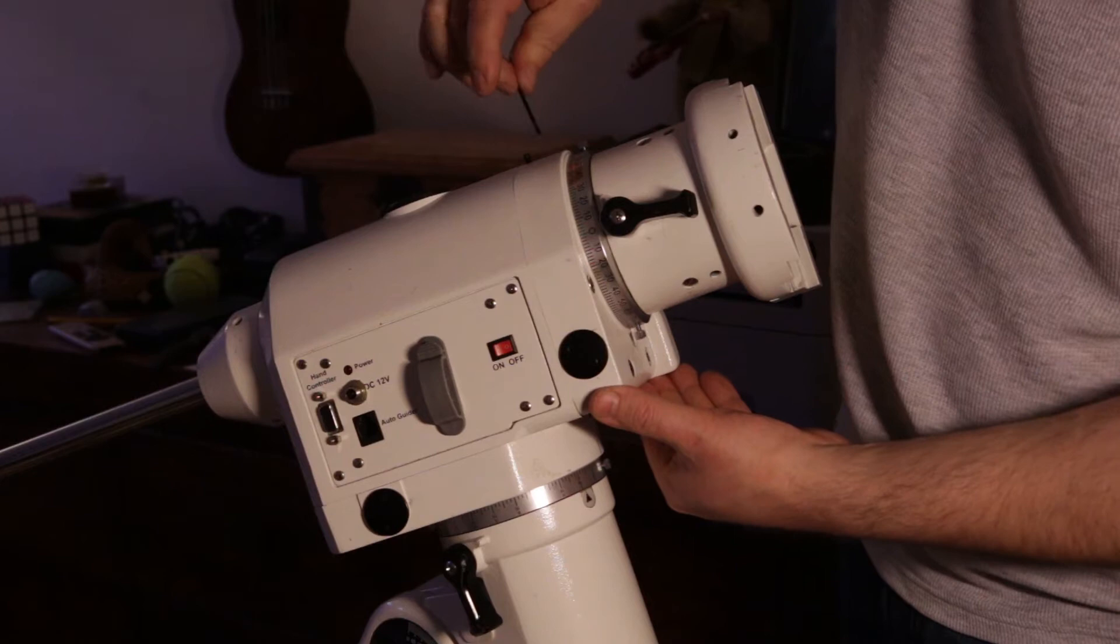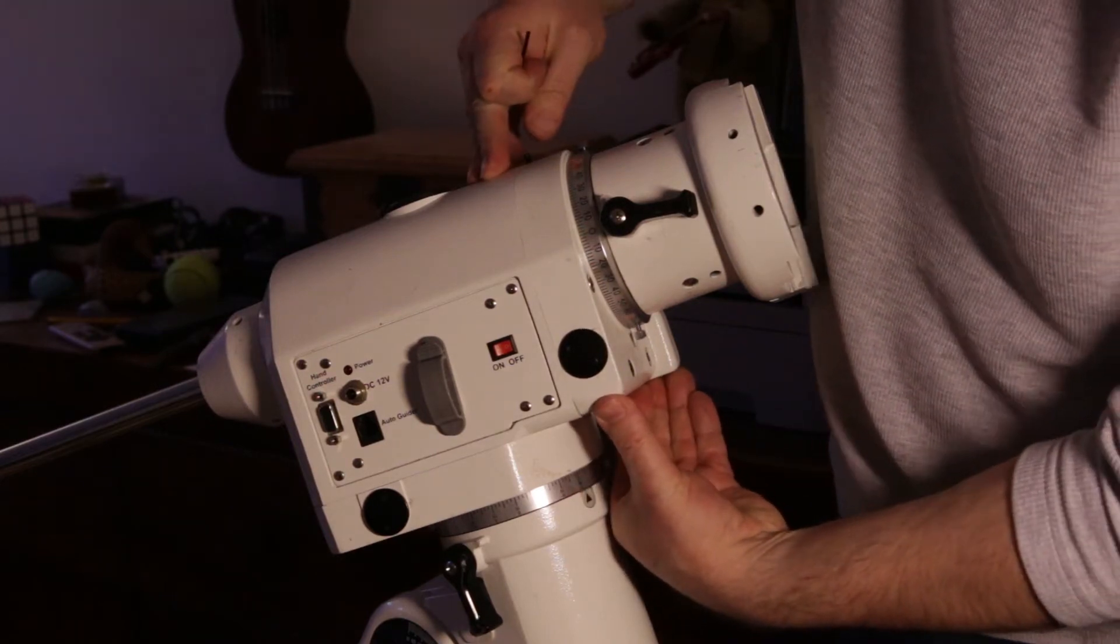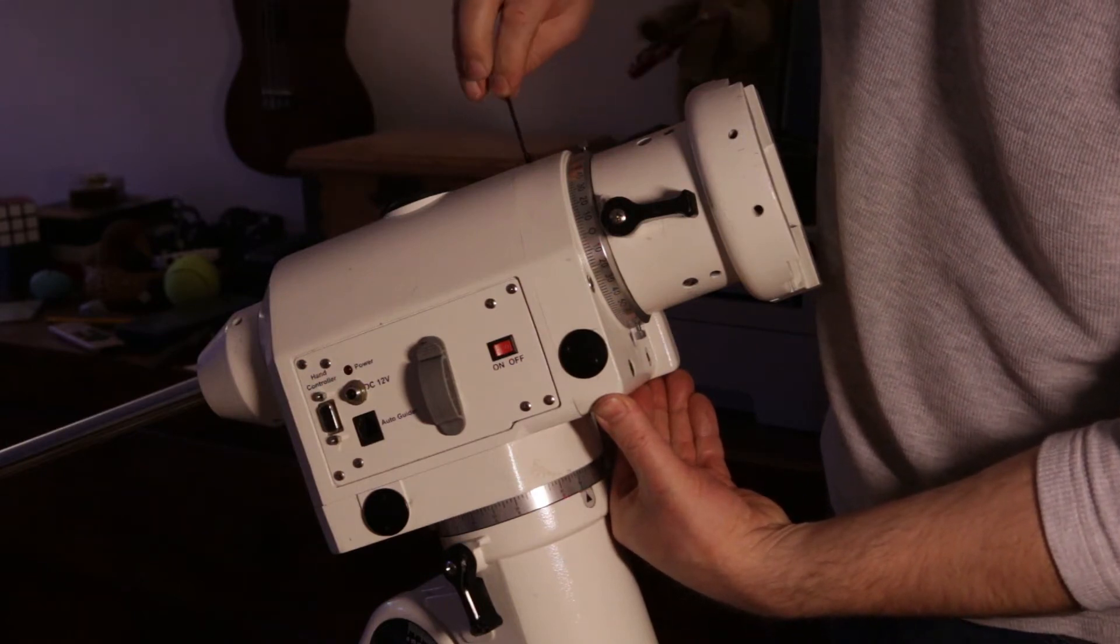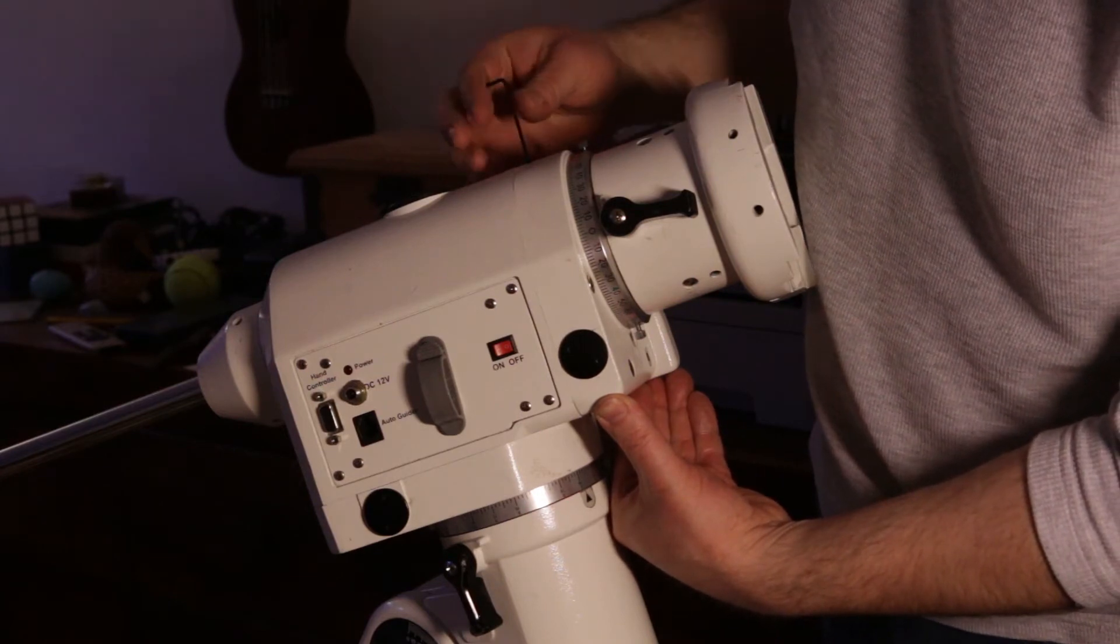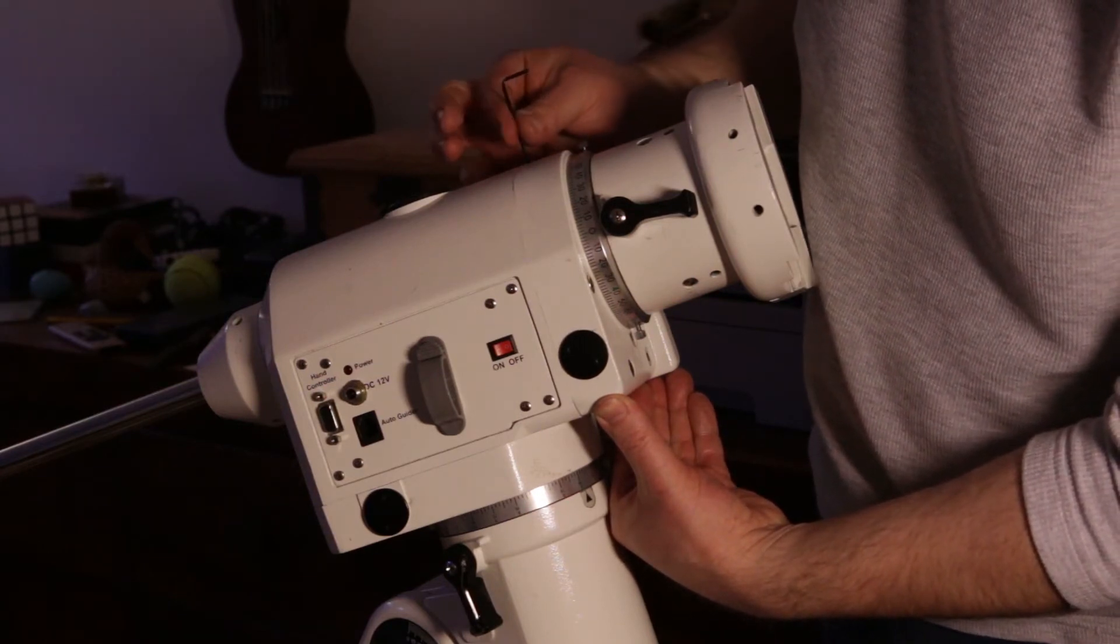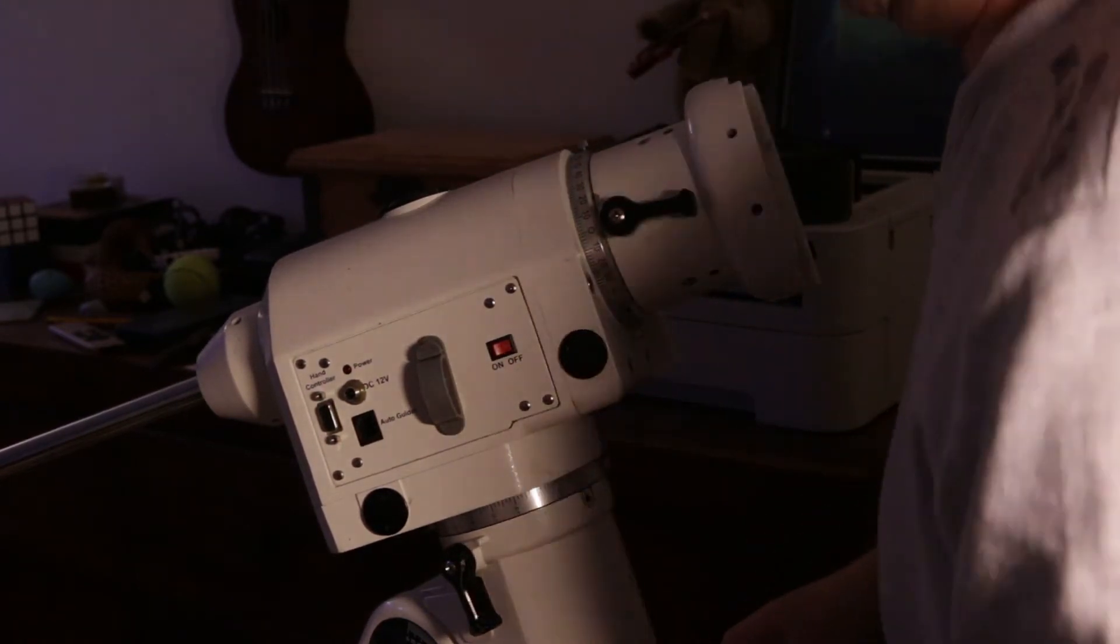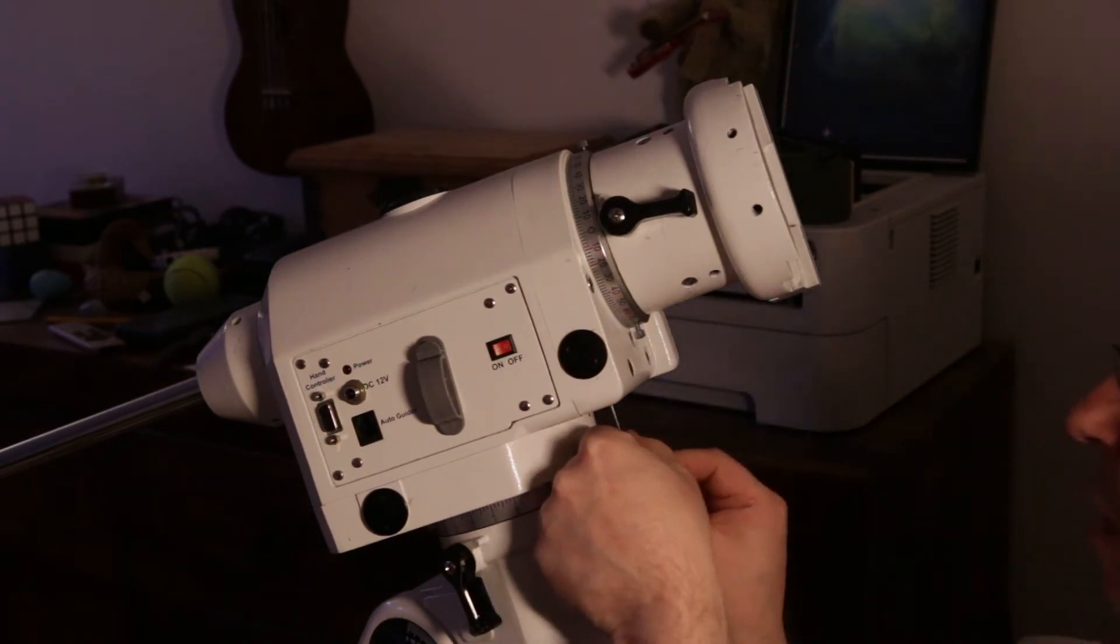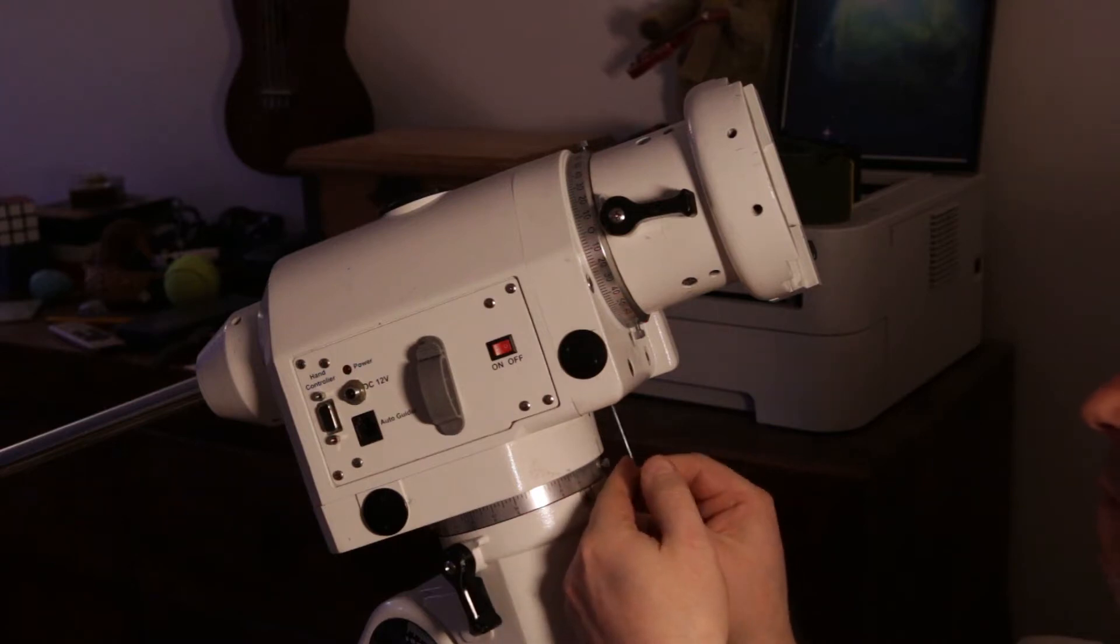And I'm going to start by first of all lifting up the shaft against the worm gear and then tighten this top grub screw, only finger tight, and then also tighten this opposing screw finger tight as well.